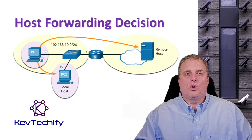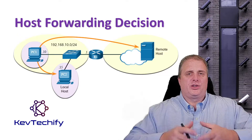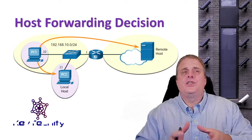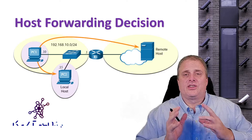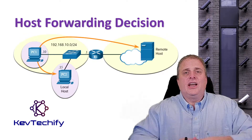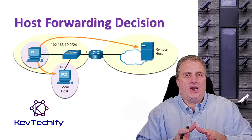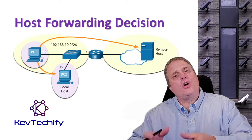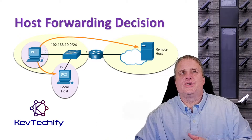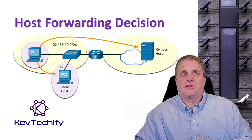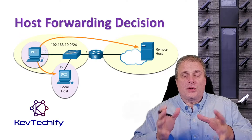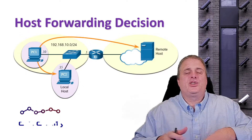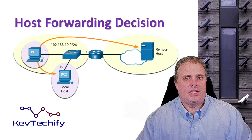When a host is routing traffic towards its destination, the packets are always created at the source. Wherever that data is starting, that's where those packets are created. That packet doesn't change all the way until it reaches its destination. Each host creates its own routing table — what's the best way to get to our destination?